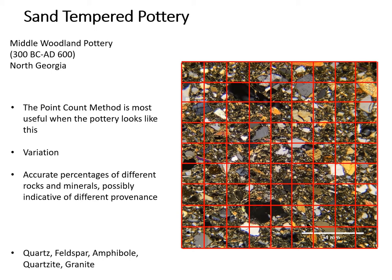The percentages of these different rocks and minerals could be indicative of a specific provenance. Once the entire sample has been counted, the analyst will compare the compositional data — the presence of each type of inclusion — and group the pottery. The different groups could indicate different provenance, different groups of potters, or both.